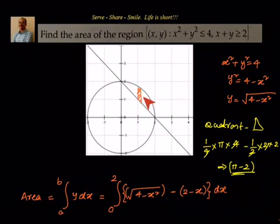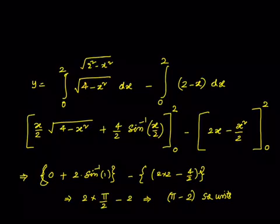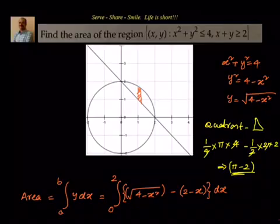To find this area by integration using the vertical strip method: area = ∫ from 0 to 2 of y dx, where the strip height is y of the circle minus y of the straight line = √(4 − x²) − (2 − x). After integration and substituting x = 0 and x = 2, we get π − 2 square units. This is verified as: area of sector (quadrant, 90°) minus area of isosceles right-angle triangle = π − (1/2)·2·2 = π − 2 square units.